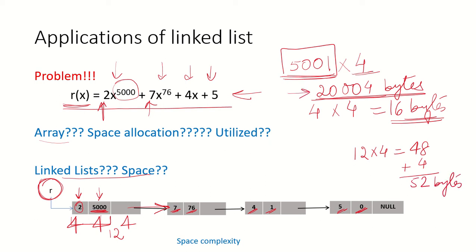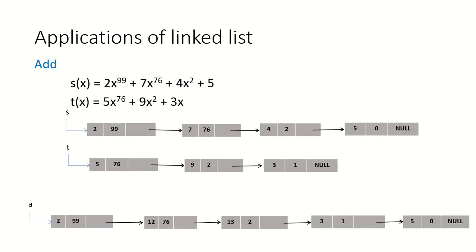Compare 200,000 bytes with only 52 bytes. You can see that if we have polynomials with large exponents it makes sense to use a linked list, and you can see the space complexity advantage. However, if the exponents are small then you can use arrays or linked lists depending on your ease of use. Now, if we are using a linked list to represent polynomials, suppose we have S(x) with 2x to the power of 99, 7x to the power of 76, and so on, and T(x) with 5x to the power of 76 and so on — how are we going to add these two polynomials?